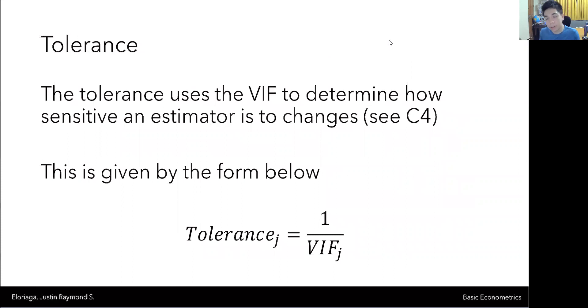Another key concept is essentially tolerance. Tolerance basically uses the variance inflating factor to determine how sensitive an estimator is to changes. The way that we compute for tolerance is essentially 1 over VIF. Meaning we can essentially conclude that when the VIF increases, the tolerance will decrease. So we see an inverse relationship between the variance inflating factor and the tolerance level.